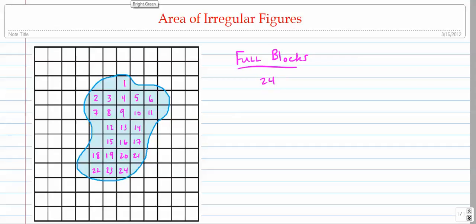Next up, we need to go through and calculate partial blocks. In order to do that, I'm going to use a little green marker here.